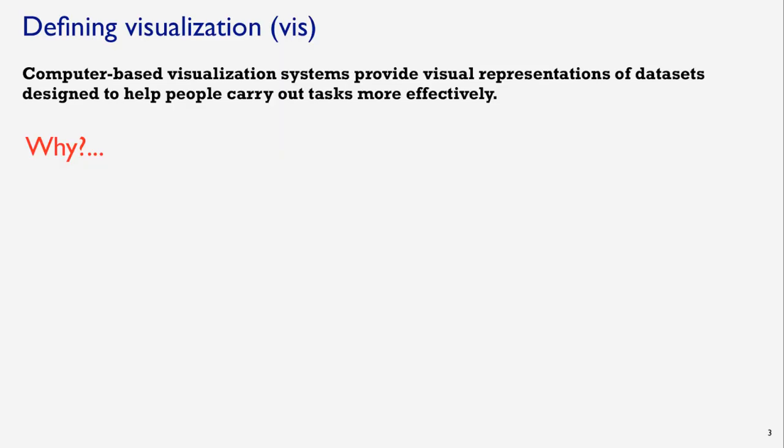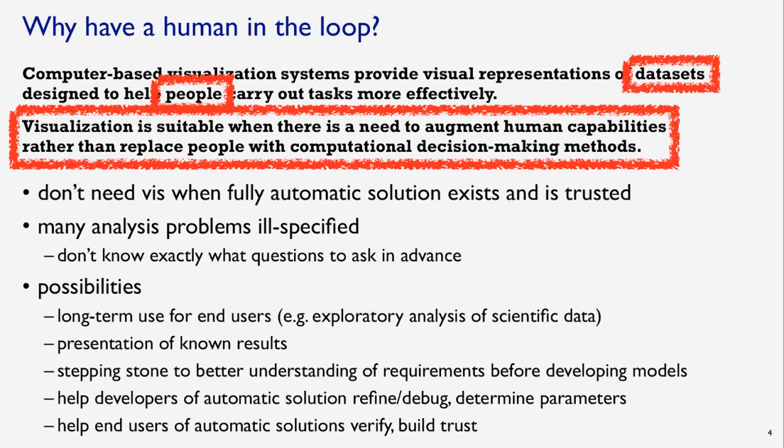Here's a definition of visualization: Computer-based visualization systems provide visual representations of datasets designed to help people carry out tasks more effectively. The real focus here is datasets, people, and tasks. Visualization is suitable when there is a need to augment human capabilities rather than replace people with computational decision-making methods like machine learning.